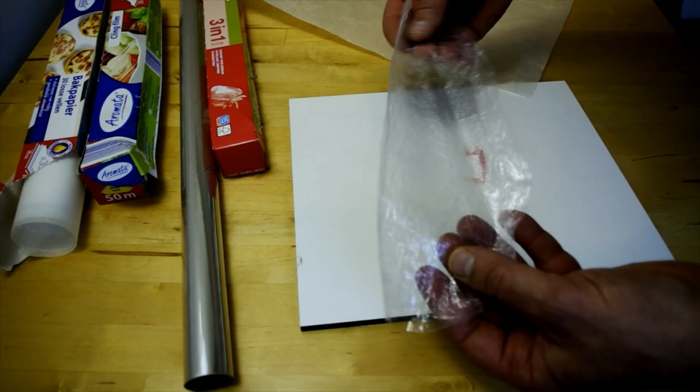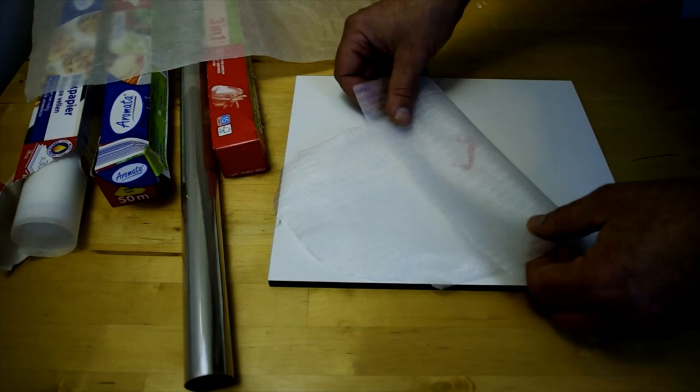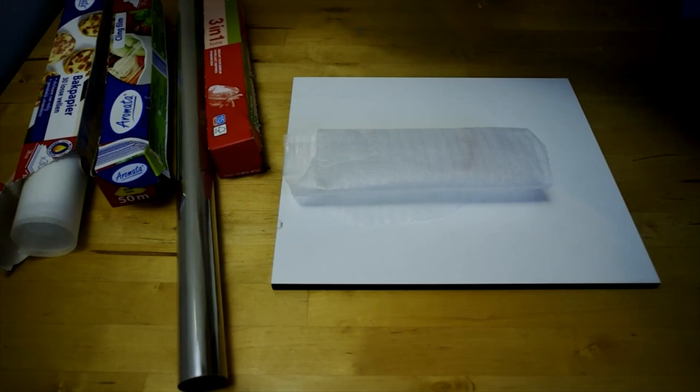The same trick can be done with foam, use a higher temperature to get the bubbles melted. Both cling film and foam are a polyethylene fabric and can be mixed together in the laminating process.